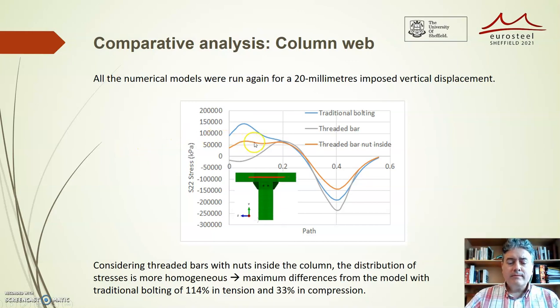Regarding the compression zone, the curves have fewer differences. The compressions are a little higher in the model with threaded bars without nuts compared to the other two models. This comparison indicates the need for placing nuts inside the column to avoid compression increments when using threaded bars.